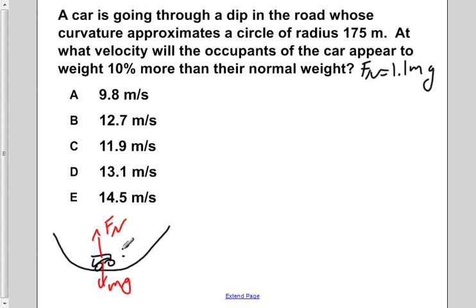and we know that we have a net acceleration, our centripetal acceleration, directed upwards, because we're at the bottom of our circular path.